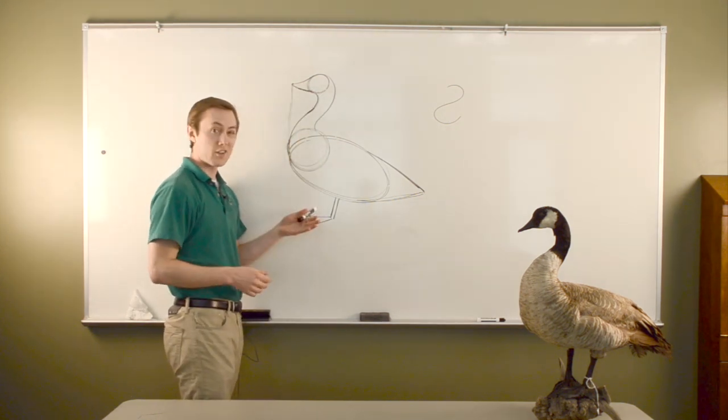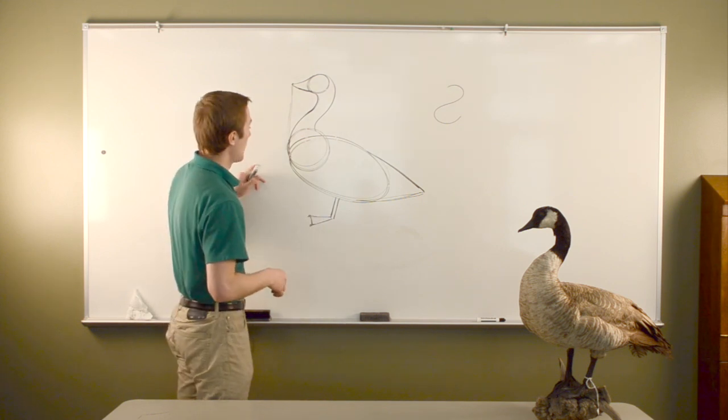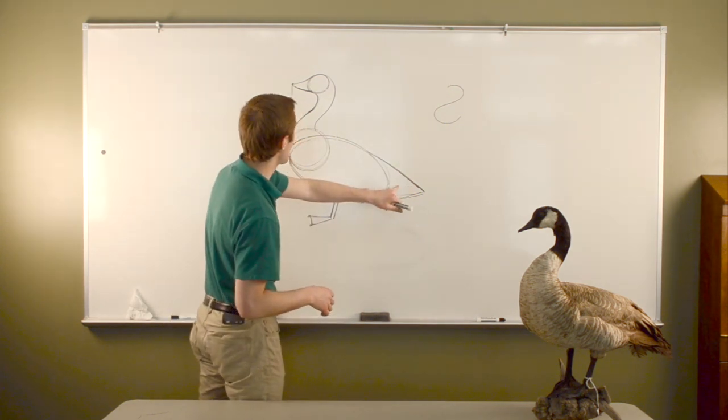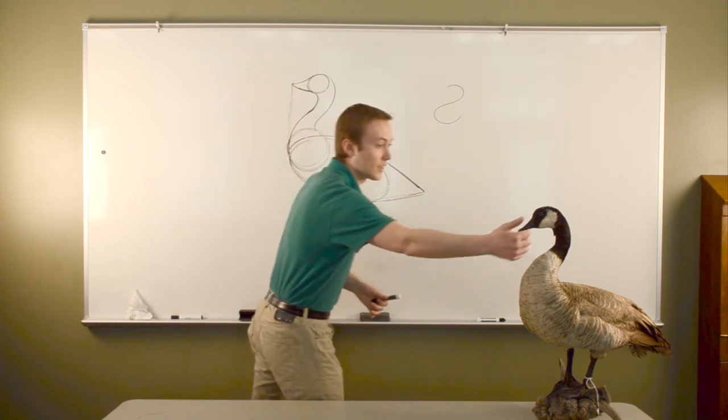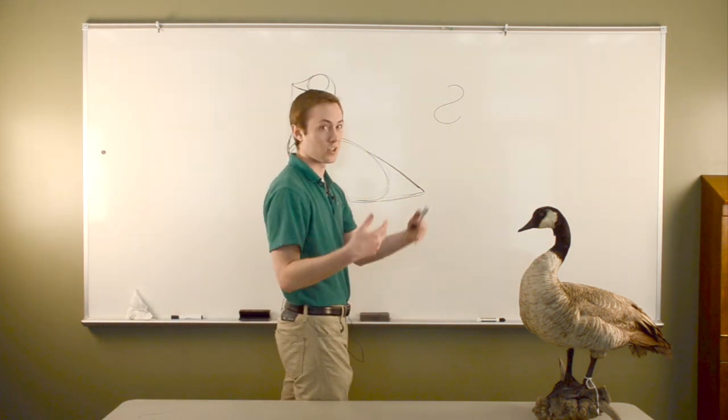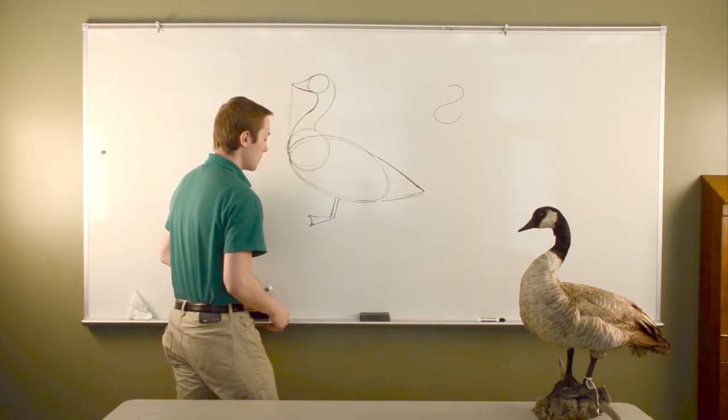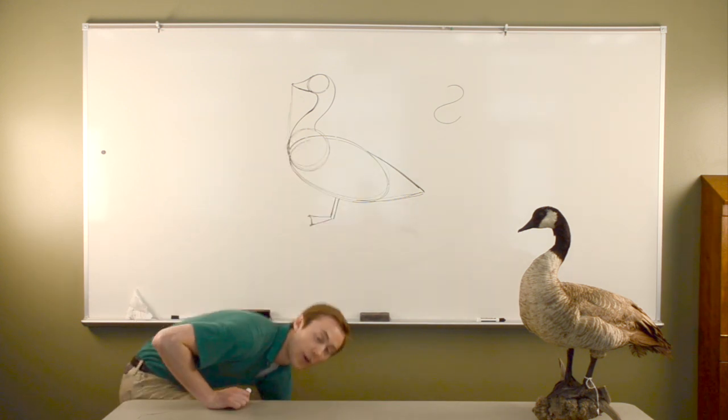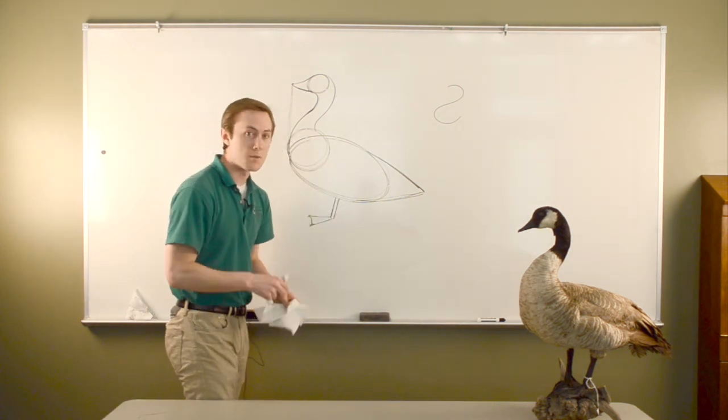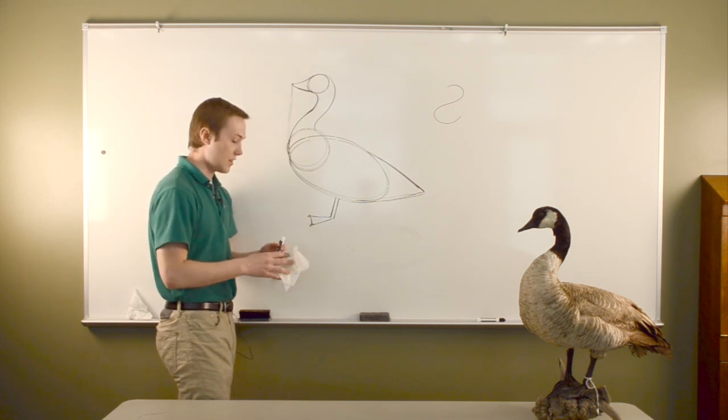He's missing an eyeball. He's missing his feathers. He's missing what else? His big tail and wing feathers out here. And he's missing the markings that make him look like a Canada goose and not just a white goose or a black goose, right? Before we get there though, let's erase some of our extra lines. Remember, erasing is okay. And some of these lines, we don't need them.